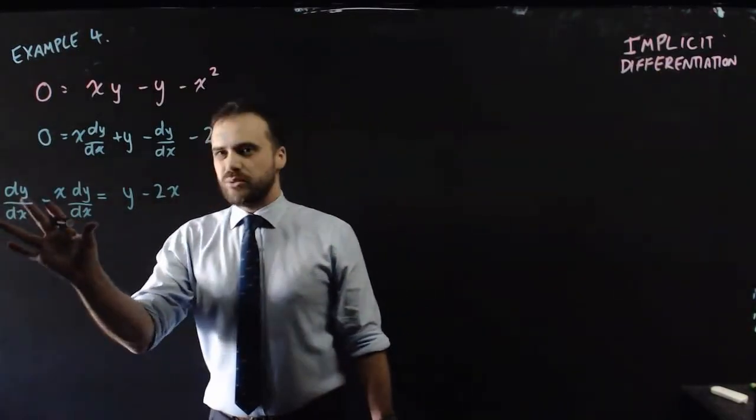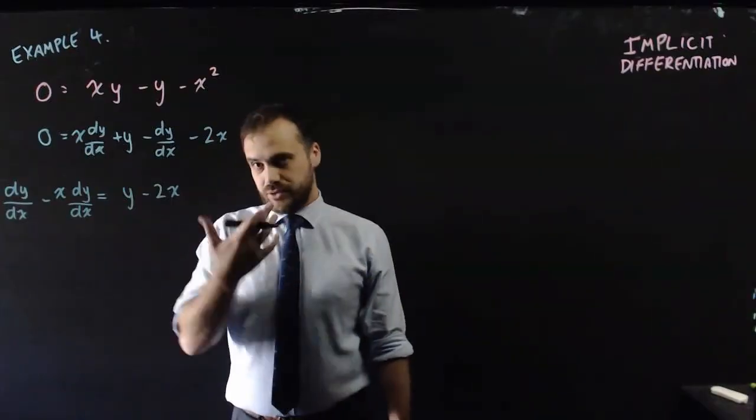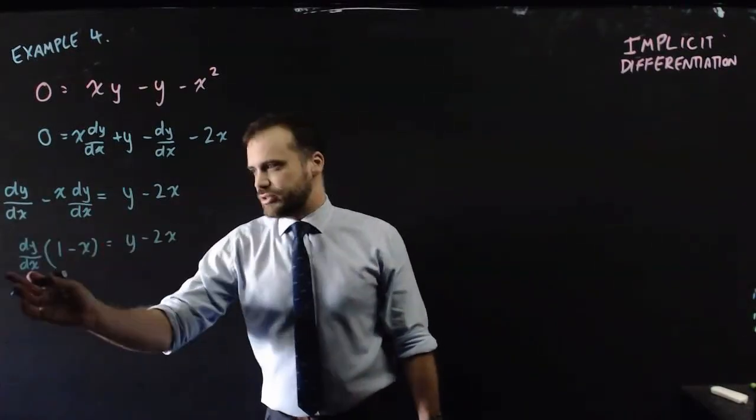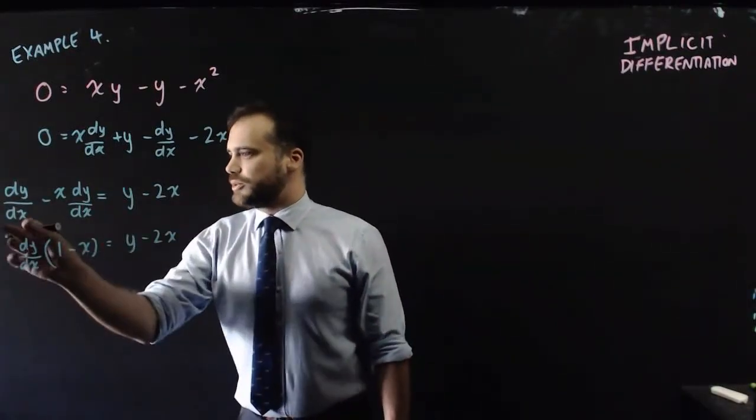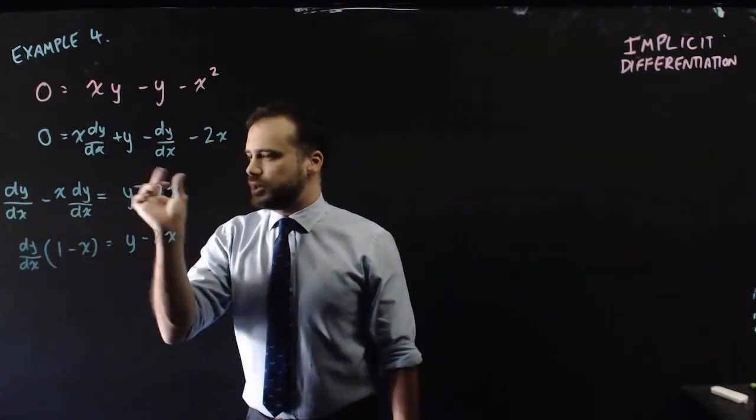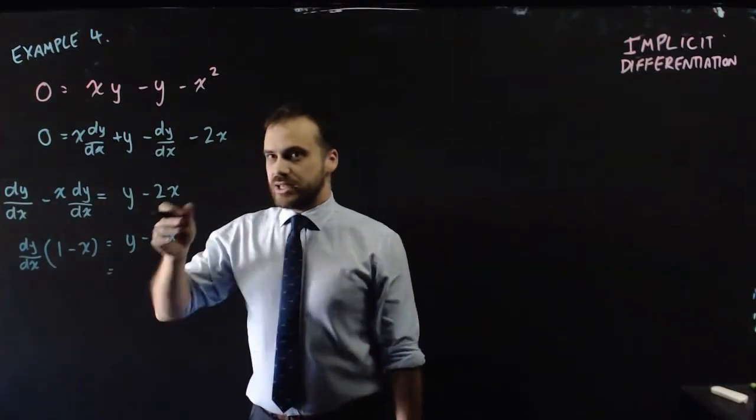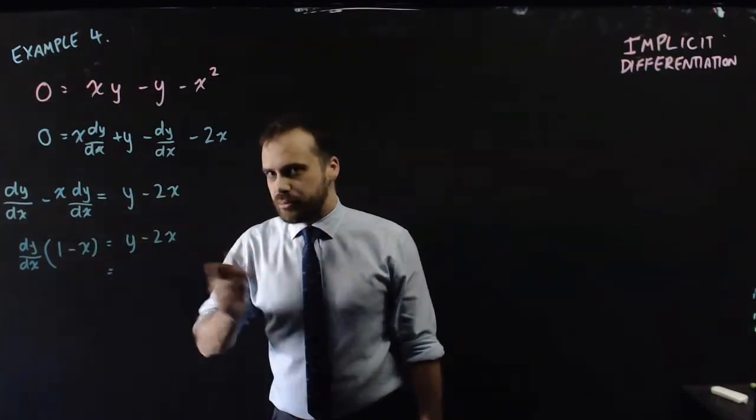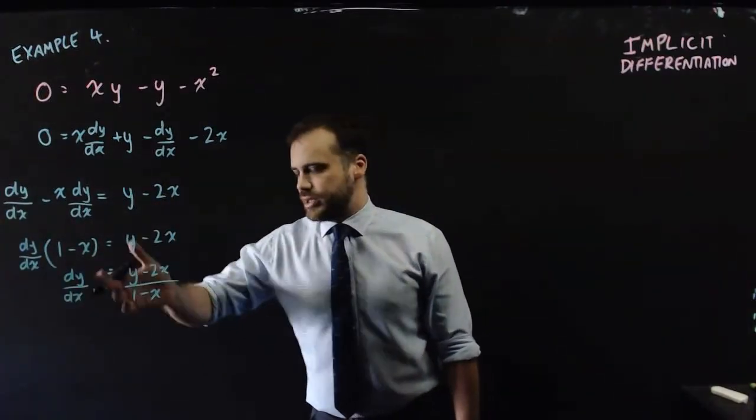Once we've got that, look here. We have a common factor of dy/dx. So we can factorize dy/dx times 1 will equal that. dy/dx times negative x will equal that. And now to get dy/dx by itself, we just divide both sides by 1 minus x. And there we have our answer.